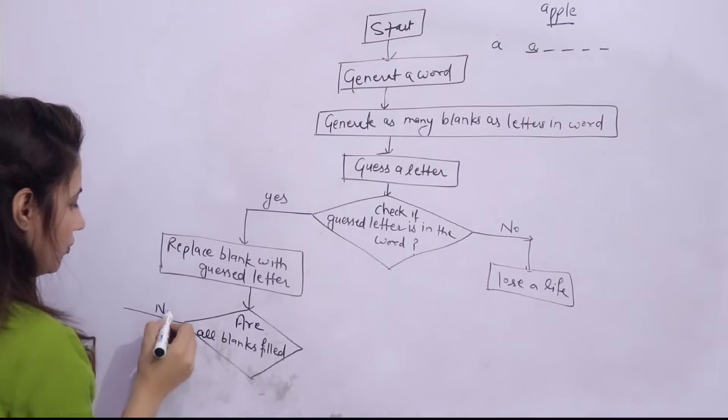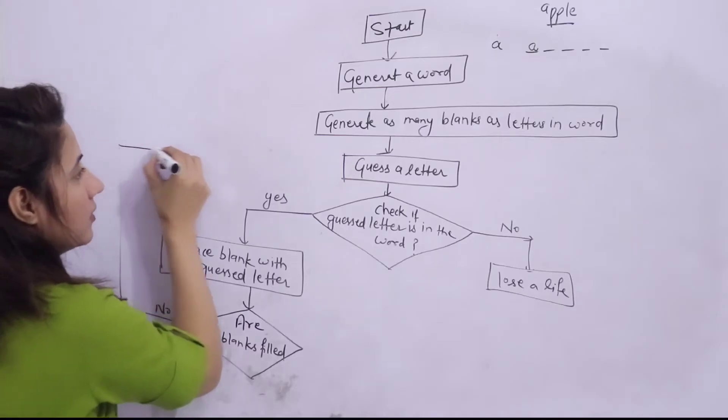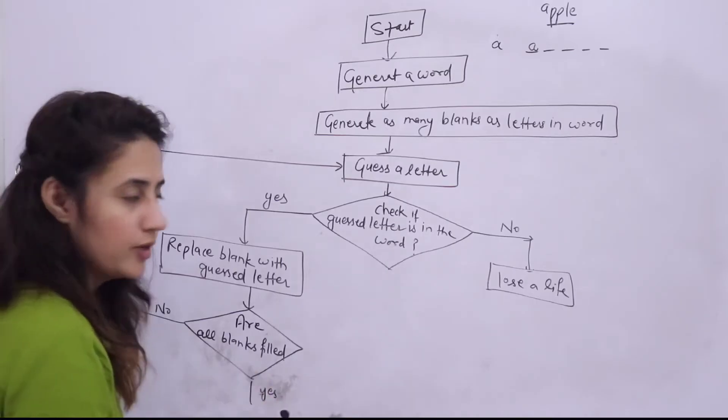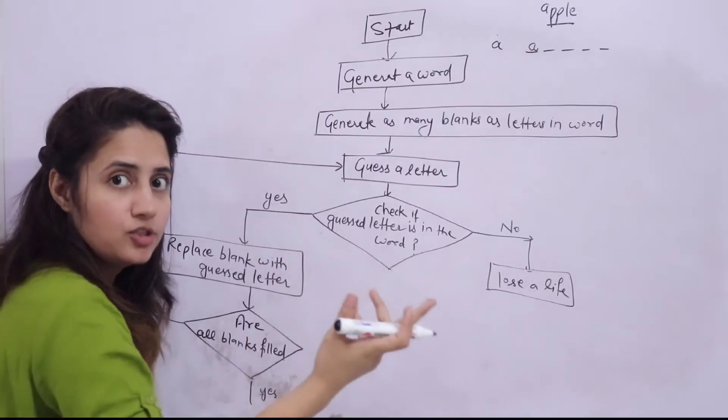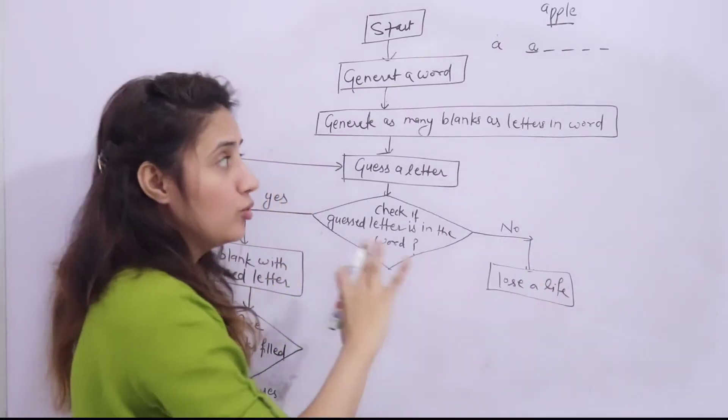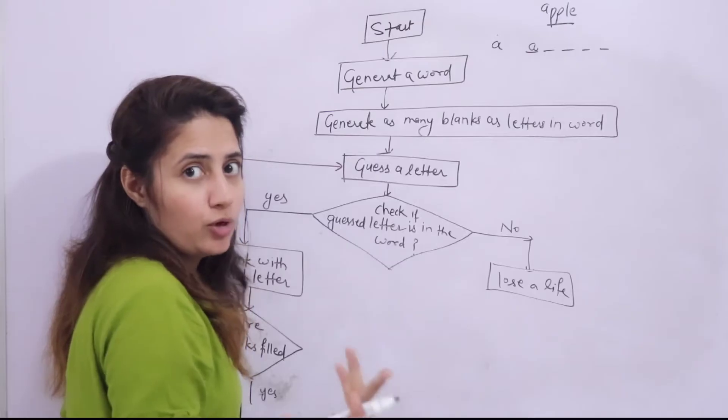So if no, then again guess a letter. If yes, then obviously we are going to exit. But the second condition for game over is: next is lose a life. So if you are out of lives, then also game over and you are going to print a message you are going to lose.